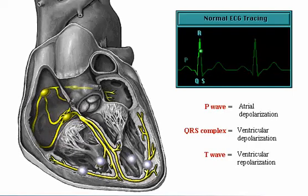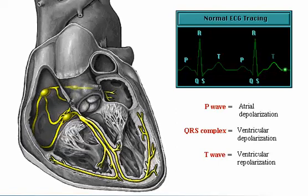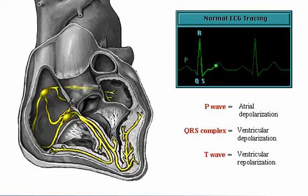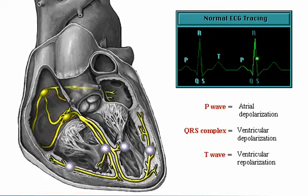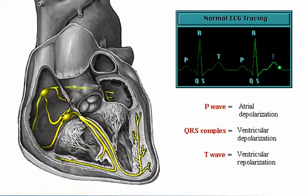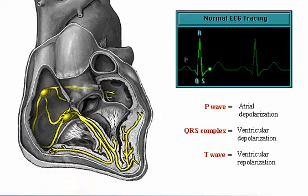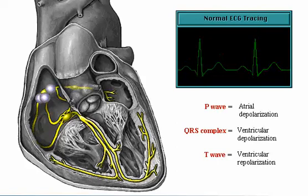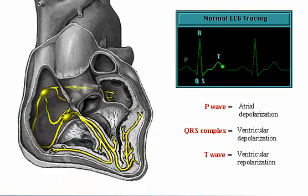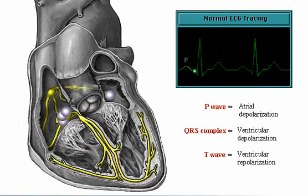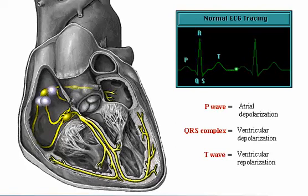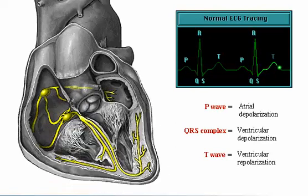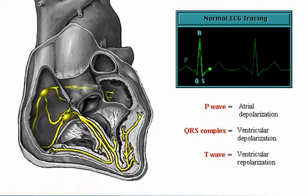These diagrams show the correlation between heart electrical activity and an ECG wave tracing. The P wave represents atrial depolarization, which is followed by atrial contraction. The QRS complex represents ventricular depolarization, which is followed by ventricular contraction. The T wave represents ventricular repolarization, which is followed by ventricular relaxation.